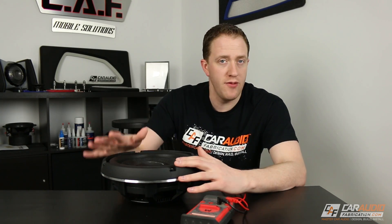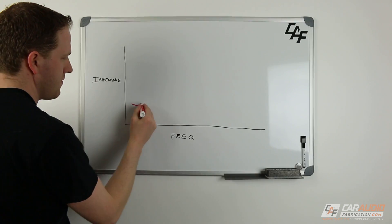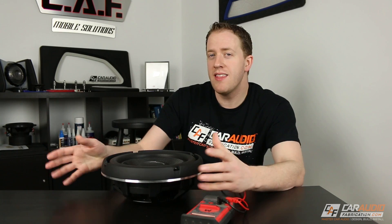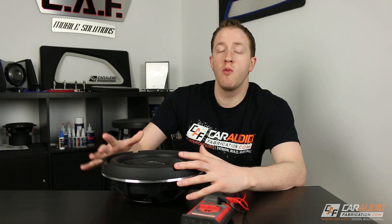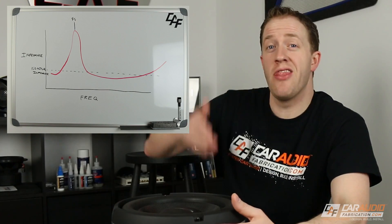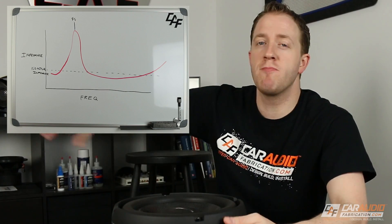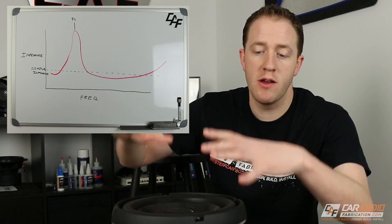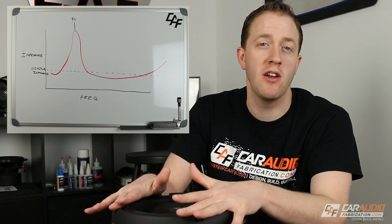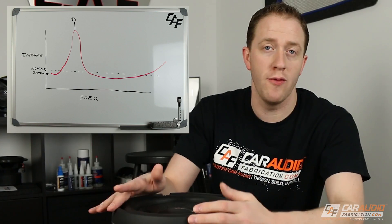Near the resonant frequency of the subwoofer, the subwoofer is going to need much more power to move because of a spike in impedance. This is balanced out by the fact that the speaker will move more easily at its resonant frequency. The spike in impedance at the resonant frequency, and also as you go into the higher frequency range, is because of the inductance of the voice coil.